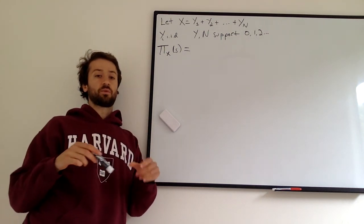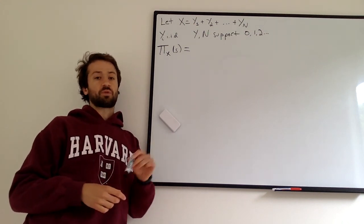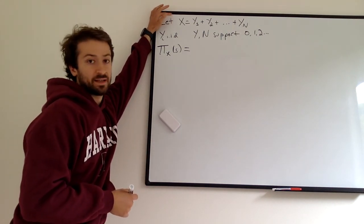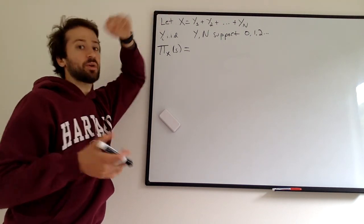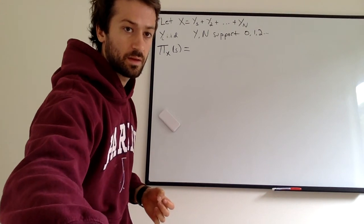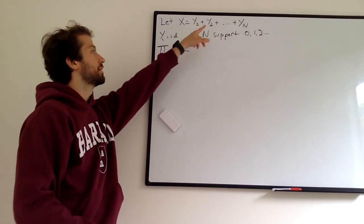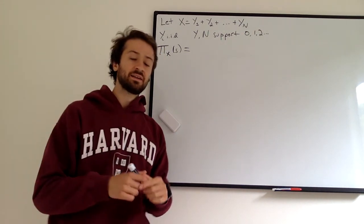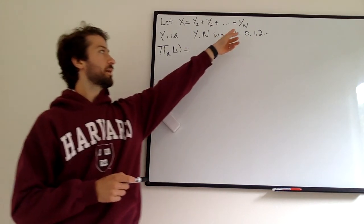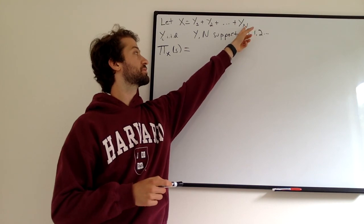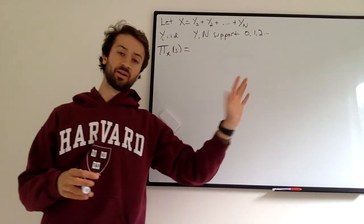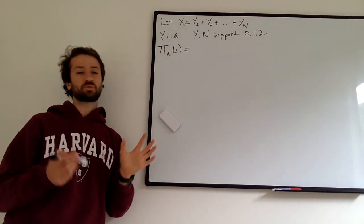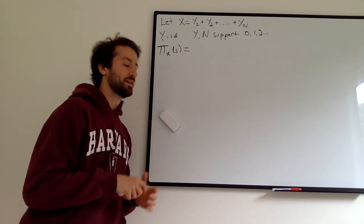In this video we're going to work our way up to solving the PGF of a branching process. We're going to start with this exercise: imagine some random variable X, where X is a sum of random variables — X equals Y1 + Y2 + ... + YN. Each of the Y terms are IID: they're independent and have the same distribution. The number of Y terms, capital N, is a random variable, so X is a random sum of random variables. You can see how this is going to be useful for a branching process, because a branching process is basically a random sum of random variables.